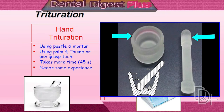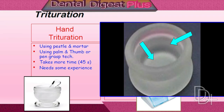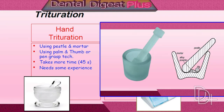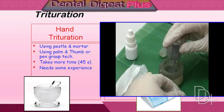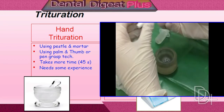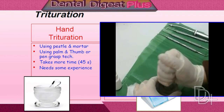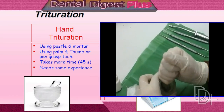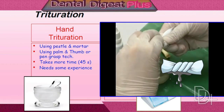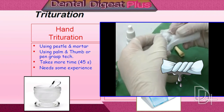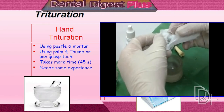A glass mortar and pestle is used for the manual mixing of dental amalgam. The inner surface of the mortar is rough, which helps by increasing friction between the amalgam and glass surface. An adequate amount of alloy and mercury are taken into the mortar and mixed together with the pestle. In manual mixing, slightly more mercury is required than in mechanical mixing, so this excess mercury should be removed by squeezing the mix with a squeezing cloth.